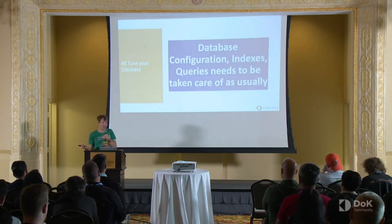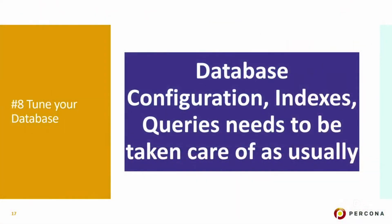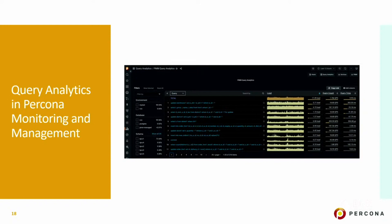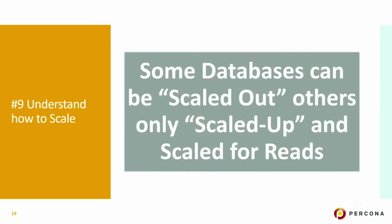Number eight: Kubernetes is not magically going to tune your database. Configuration, indexes, and queries all need to be taken care of for optimal performance. Here's a shameless plug from Percona — we have a tool based on Grafana called Percona Monitoring and Management, 100% open source, which lets you optimize queries. Number nine: understand how to scale your database of choice. Some databases scale out wonderfully by just deploying more pods; others can only scale up, and only up to certain limits. You probably don't want to run a 50-terabyte database with heavy load on Kubernetes these days.